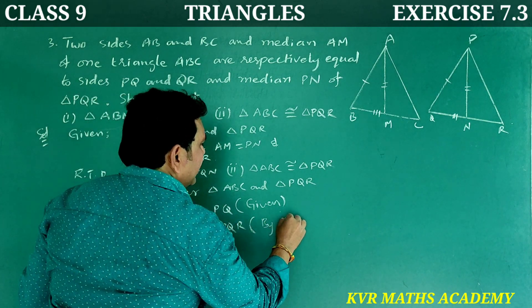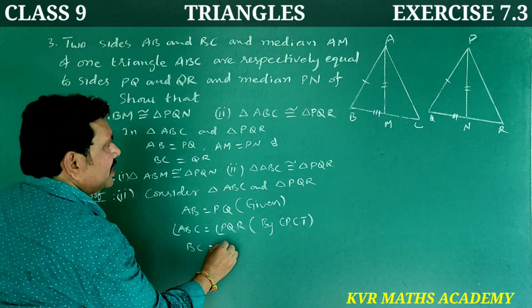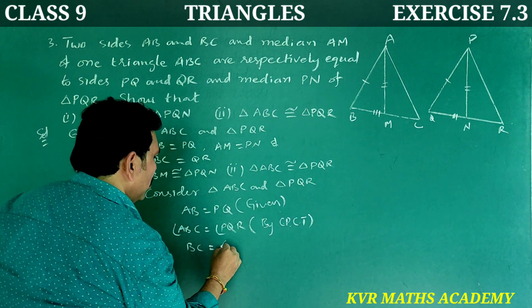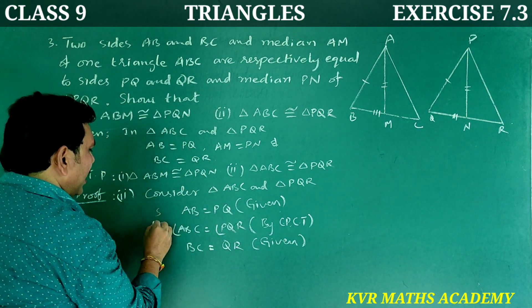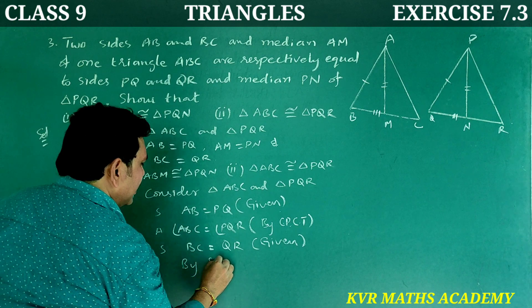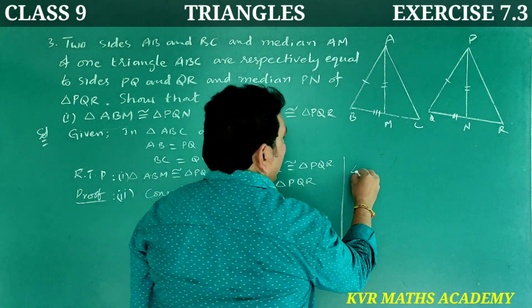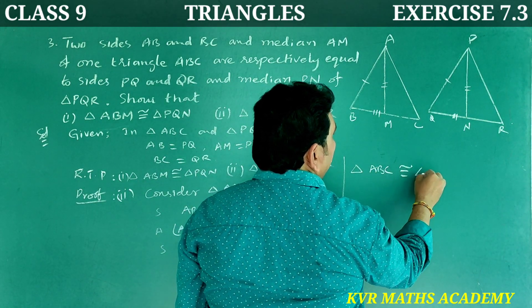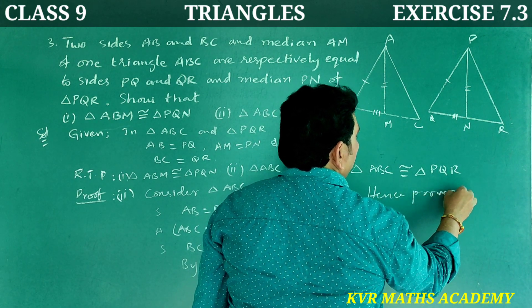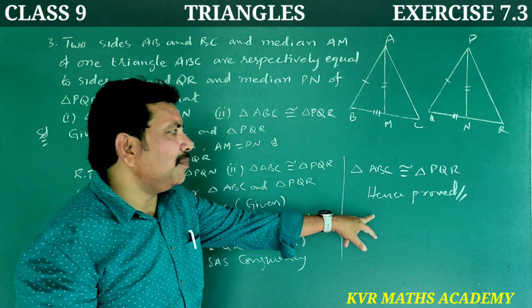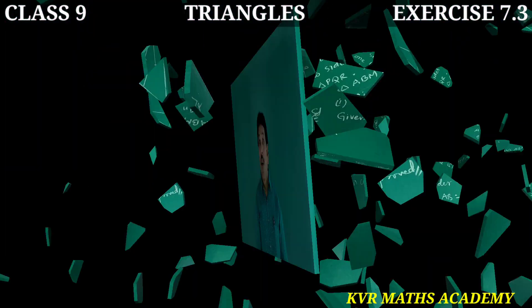By CPCT, angle ABC is equal to angle PQR. Now in triangles ABC and PQR: BC is equal to QR (given), angle ABC is equal to angle PQR (proved by CPCT), and AB is equal to PQ (given). By SAS congruency, triangle ABC is congruent to triangle PQR. Hence proved.